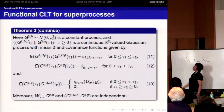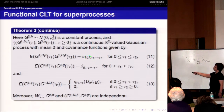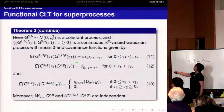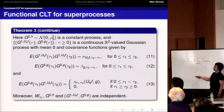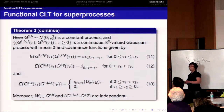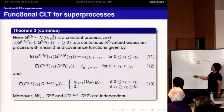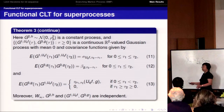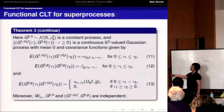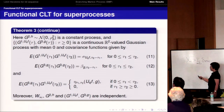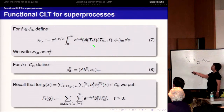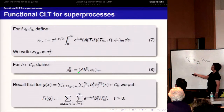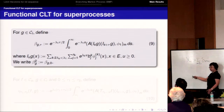The covariance function for G_1 at times tau_1 and tau_2 is given explicitly. For G_3, we can also give the covariance function. For the cross-covariance between G_3 and G_1: if tau_1 < tau_2, we get a positive covariance; if tau_1 >= tau_2, these two random variables are independent. The covariance functions are given in terms of the Feynman-Kac transform. That's the main result.